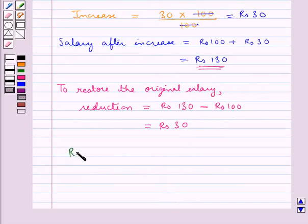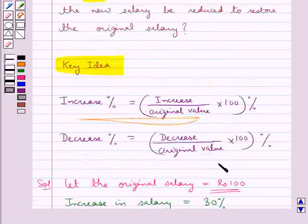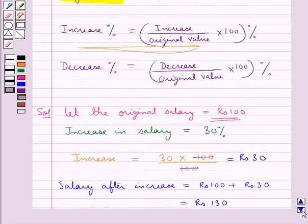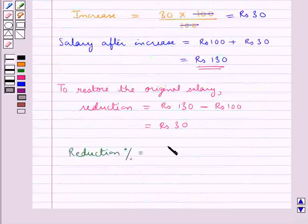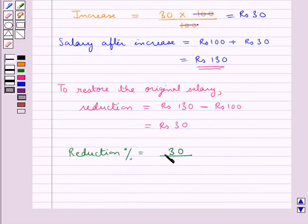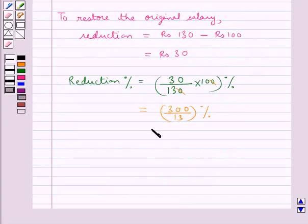Now let's find out the reduction percent. Using the formula for decrease percent — that is, decrease upon original value into 100 percent — reduction percent is equal to reduction of 30 upon the original value, which is the salary after increase, that is 130, into 100 percent.